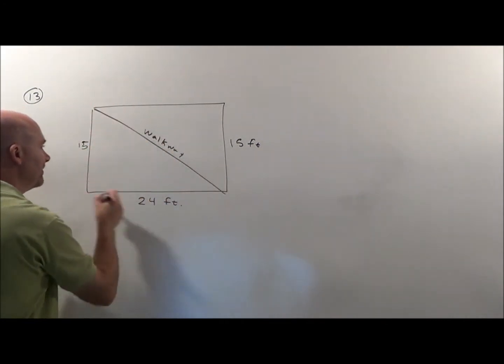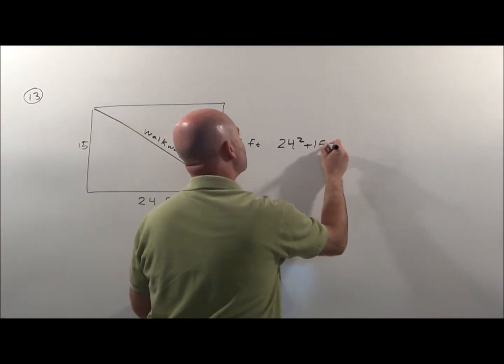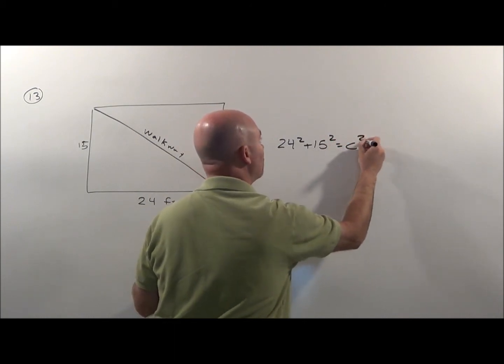So I can use the Pythagorean theorem right here: 24 squared plus 15 squared equals the pathway's length squared.